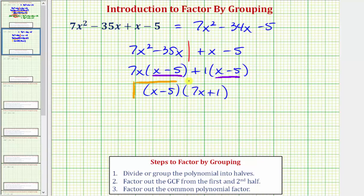And of course, if we want to check this, we could multiply this out, and let's go ahead and do this. We'd have the quantity x minus five times the quantity 7x plus one, and we'll have four products. We distribute the x, and then we distribute the negative five.